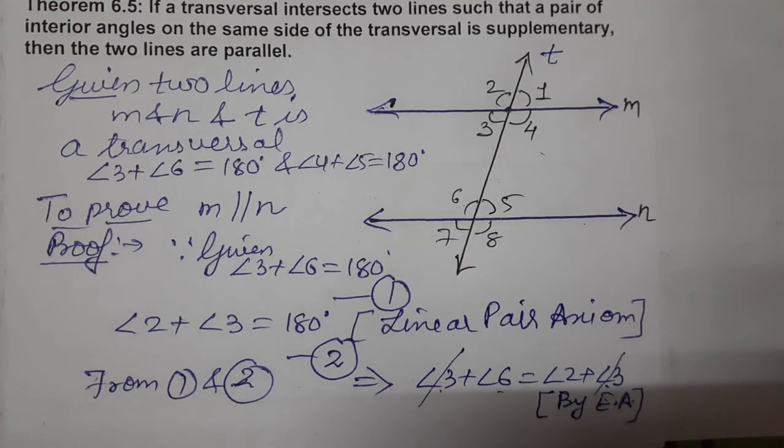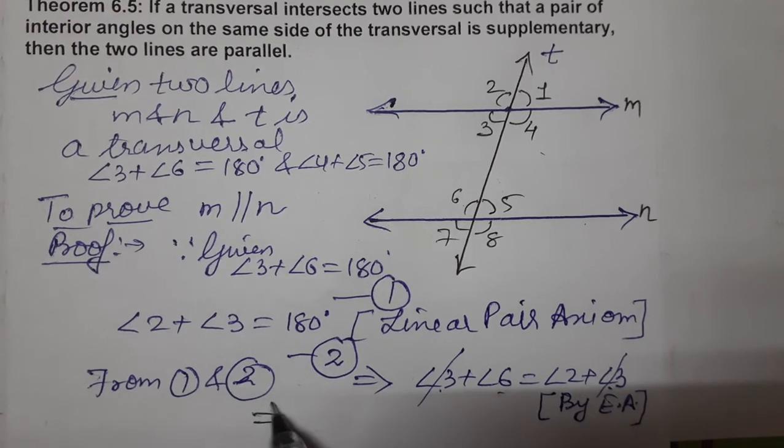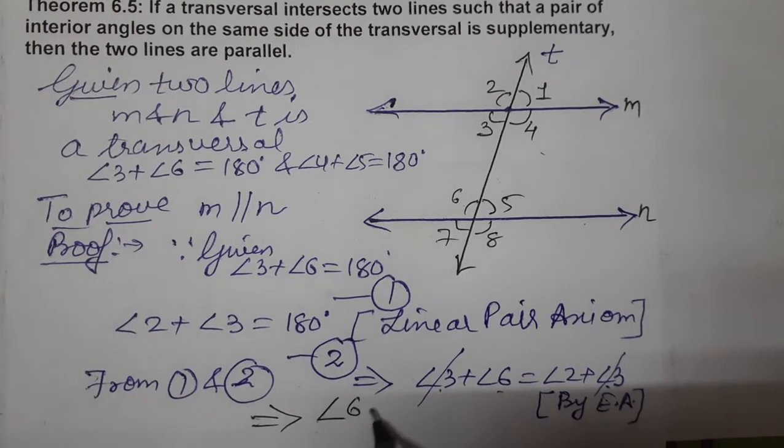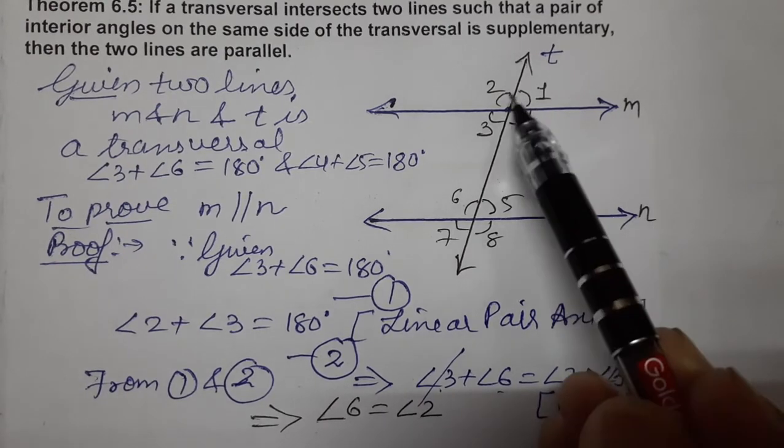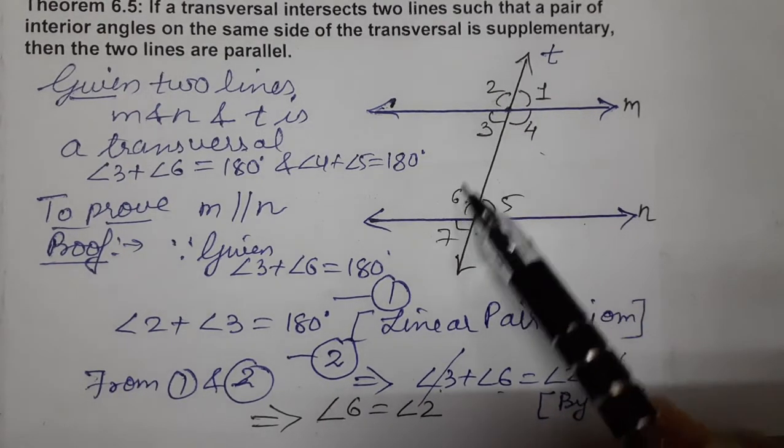By Euclid's axiom we have done this. Now from this, what result did we get? Finally, we got this result. And what was that? Angle 6 equals angle 2. Now see, angle 6 is equal to angle 2.